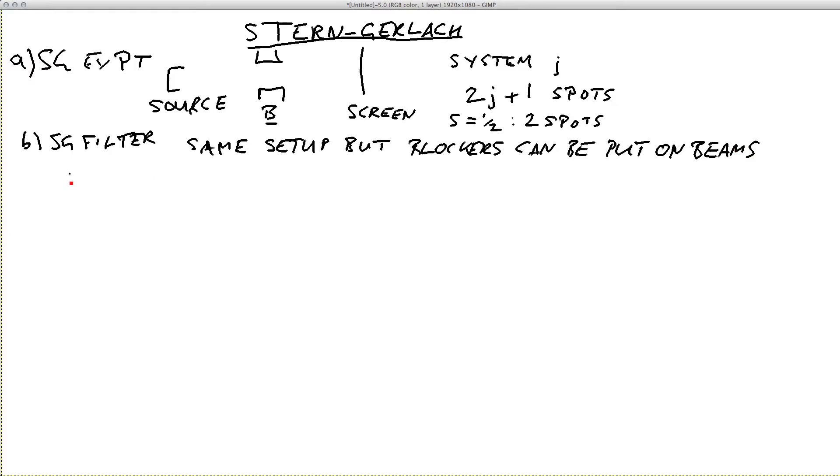In this case you might have a system in a state psi coming in at the left—that's the input. Then again we'll have a magnet with a B-field, and I'm going to say this is a B-field along the direction n, and then here we have potential blockers.